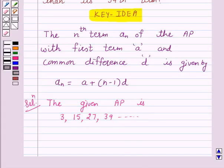According to our key idea, A is the first term of the AP. Here the first term is 3, so A equals 3. And D is the common difference, so D equals 15 minus 3, which equals 12.